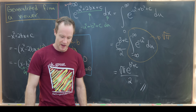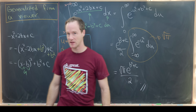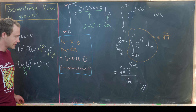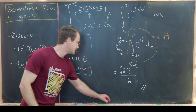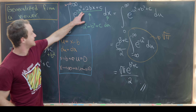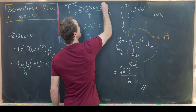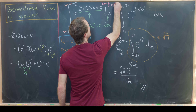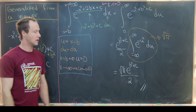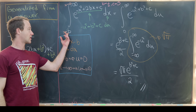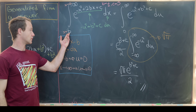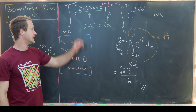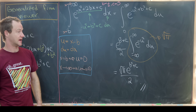Let's talk about exactly how this is generalized from a viewer. The integral the viewer sent was essentially this integral, except b was equal to one half and c was equal to zero. So the integral was from one half to infinity of e to the minus x squared plus x.